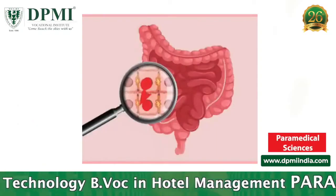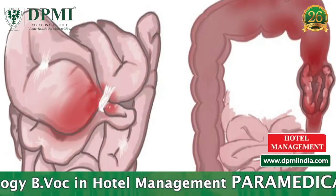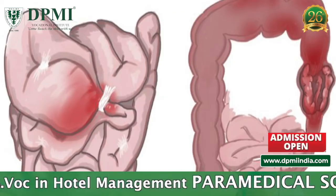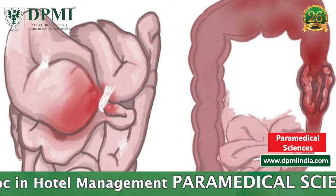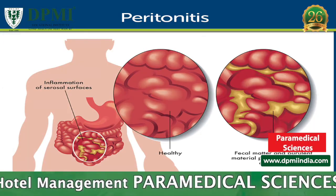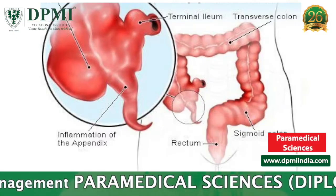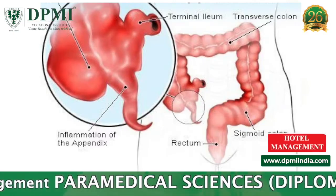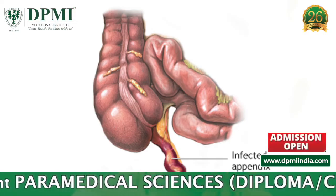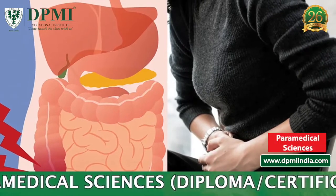Complications of appendectomy include bleeding in the abdomen, infection of the abdomen which can occur if the appendix bursts during surgery, peritonitis, bowel obstruction, injury to nearby organs, and risk of sepsis.